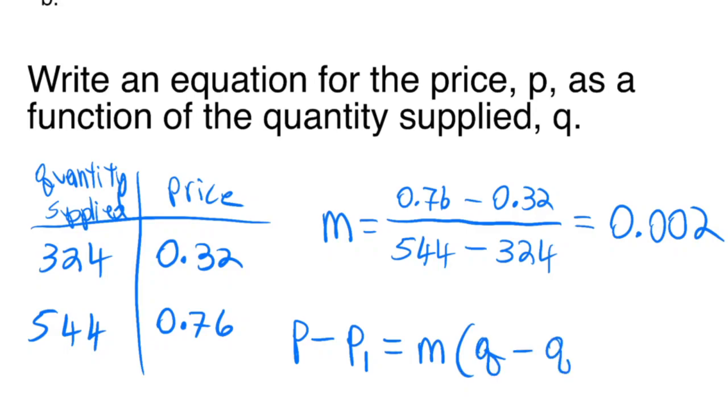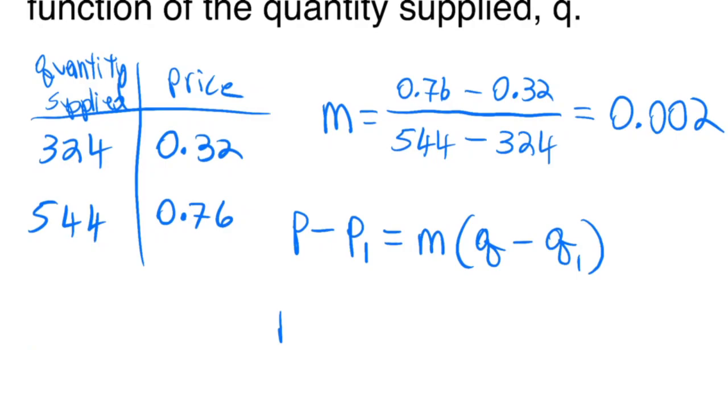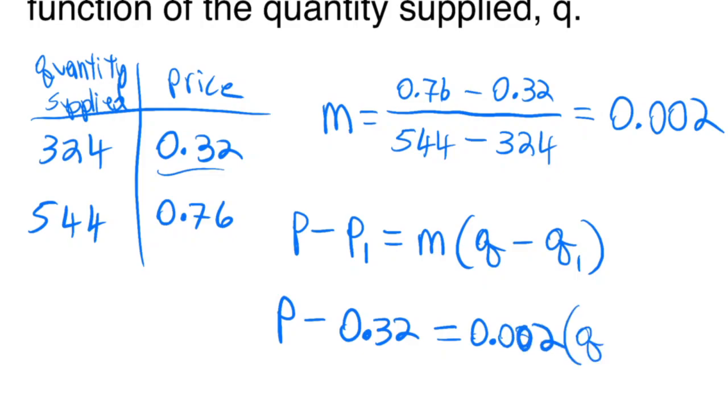Plugging all that in, P is the variable price and P₁ is the initial price, which is 0.32. The slope is 0.002, times the variable quantity supplied minus the initial quantity supplied, which is 324.